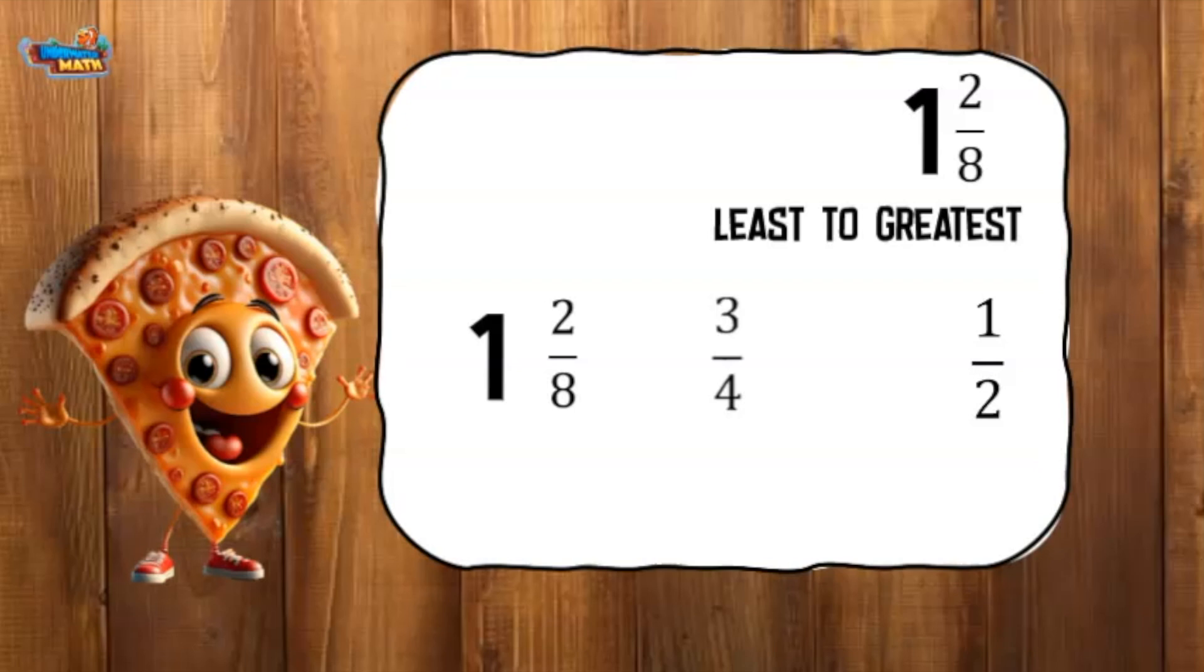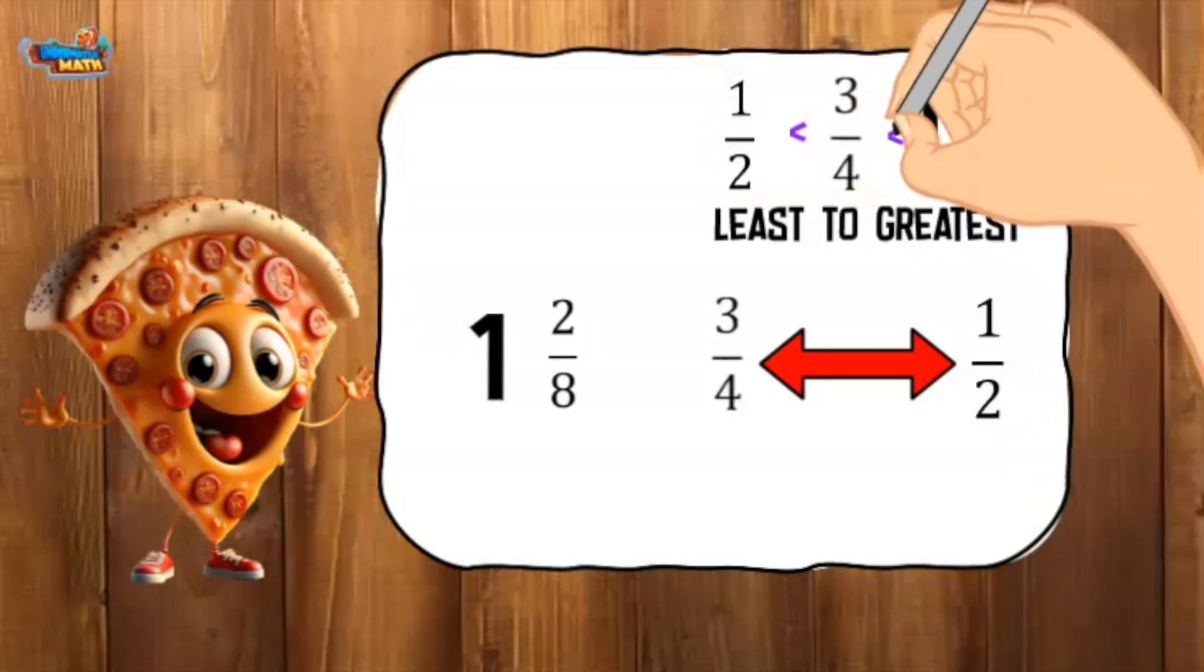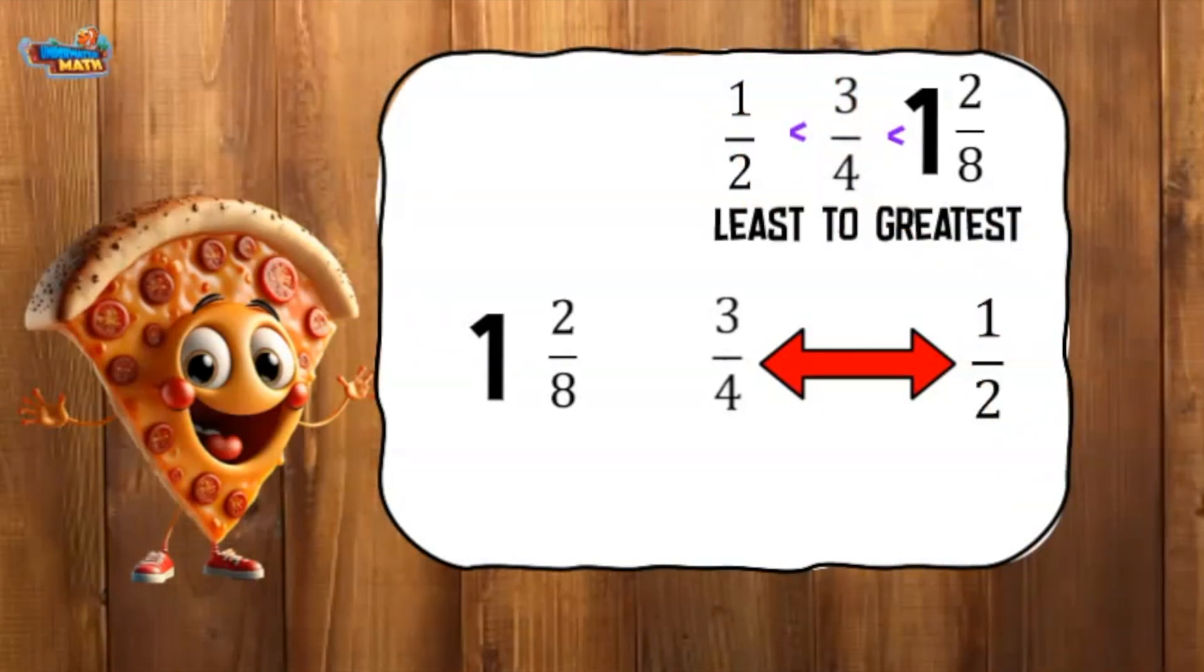We can use benchmark fractions to compare the last two fractions. One half is exactly half of the whole. Three is more than half of four, so this fraction is larger than one half. This example ordered from least to greatest is one half, three fourths, and one and two eighths.